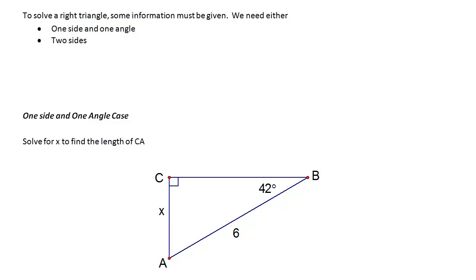With the tools we have right now, we can solve a right triangle if we have one side and one angle, or two sides. We'll talk later about other cases, but for now we need at least a side and an angle, or two sides.